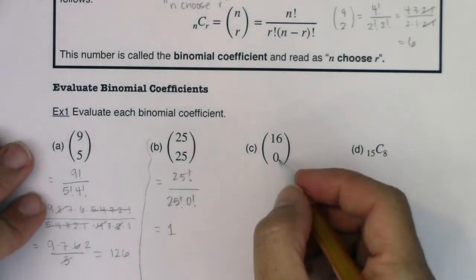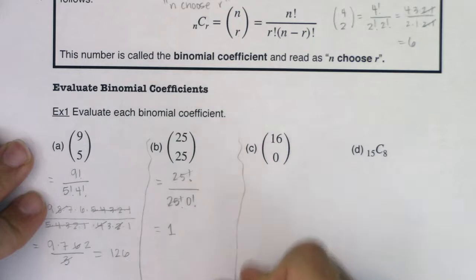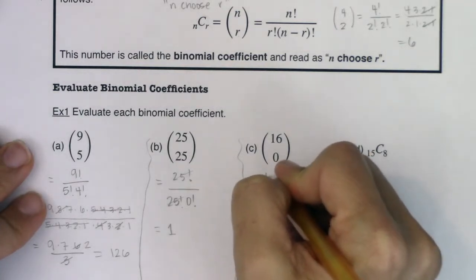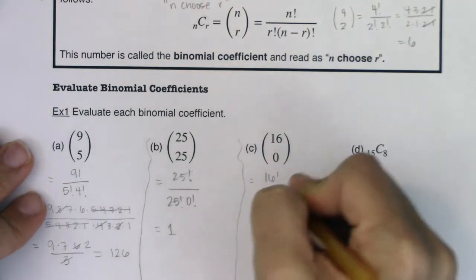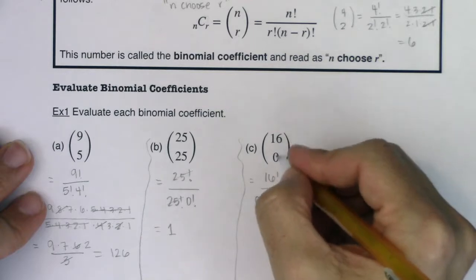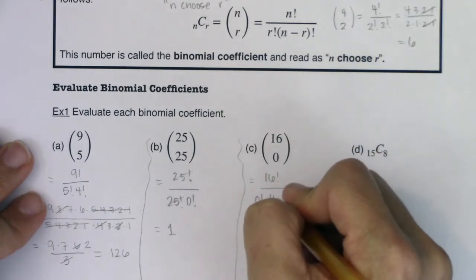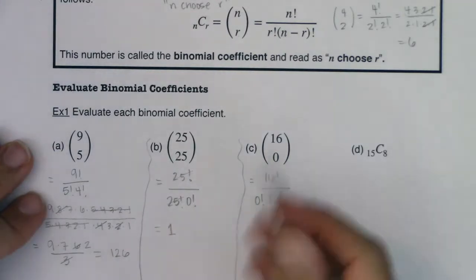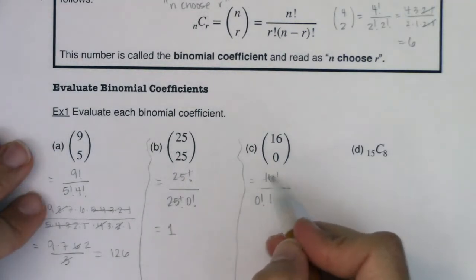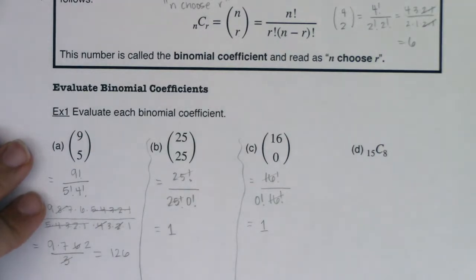Now 16 choose 0: that's 16! over 0! times 16!. The 16 factorials cancel, 0! is 1, so this is also 1.